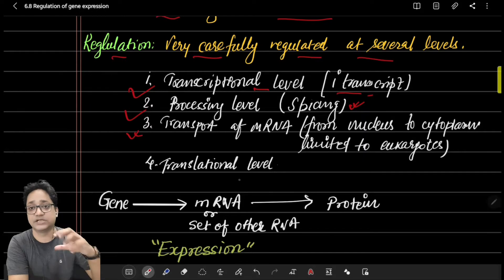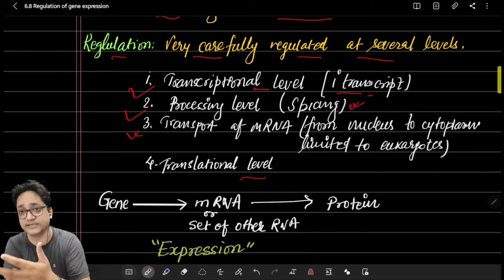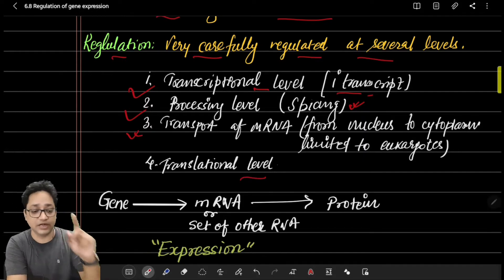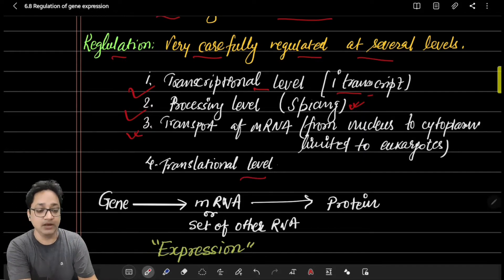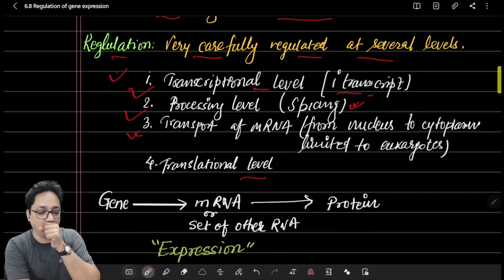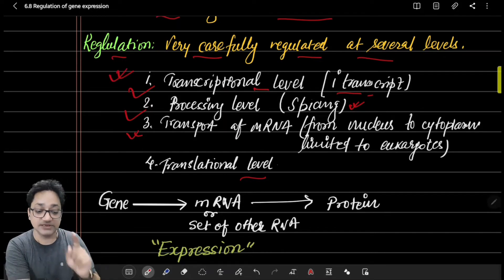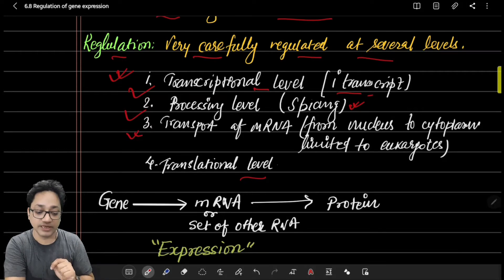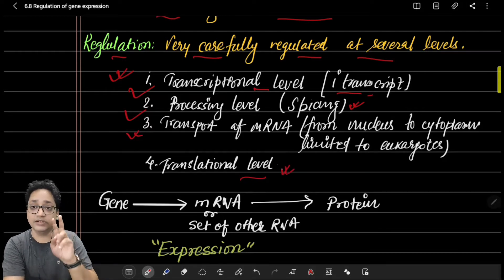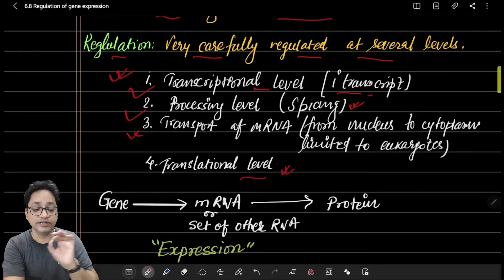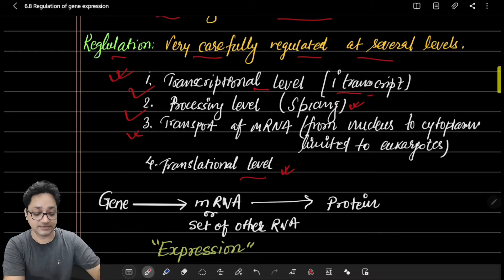Fourth, at the translational level — whether translation and protein synthesis will start or not. So, from the synthesis of mRNA all the way to the protein, gene expression is totally recognized and regulated at four different stages.